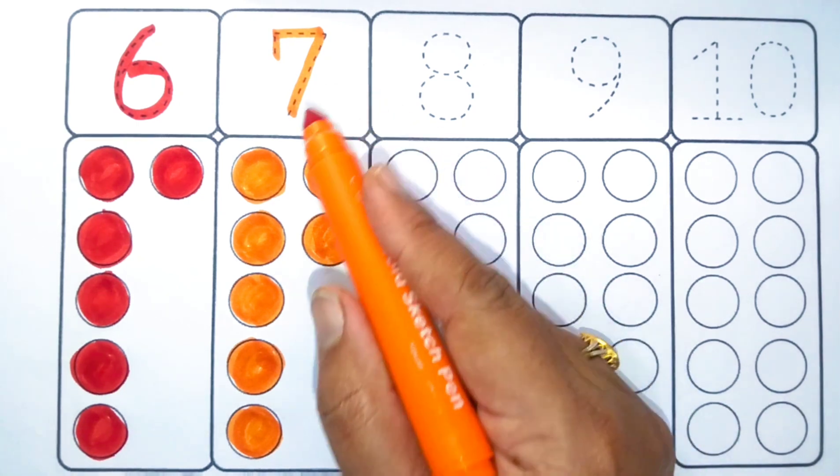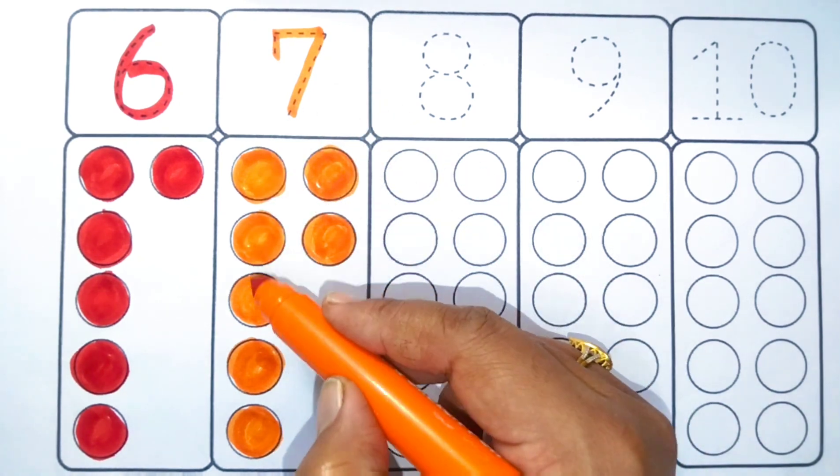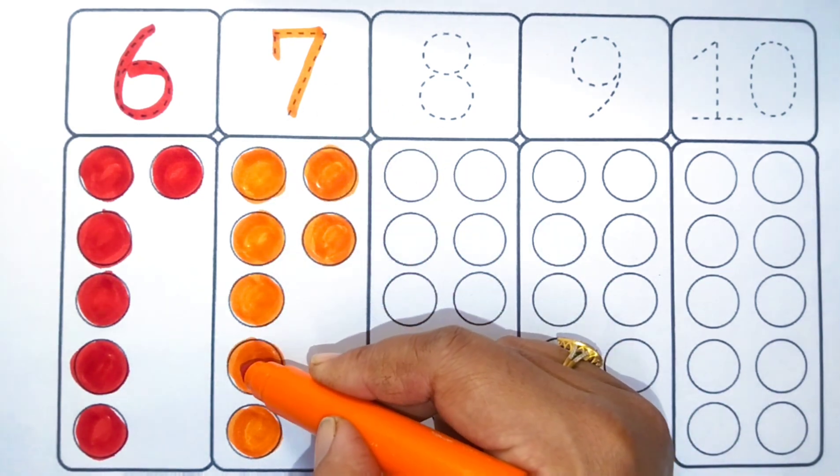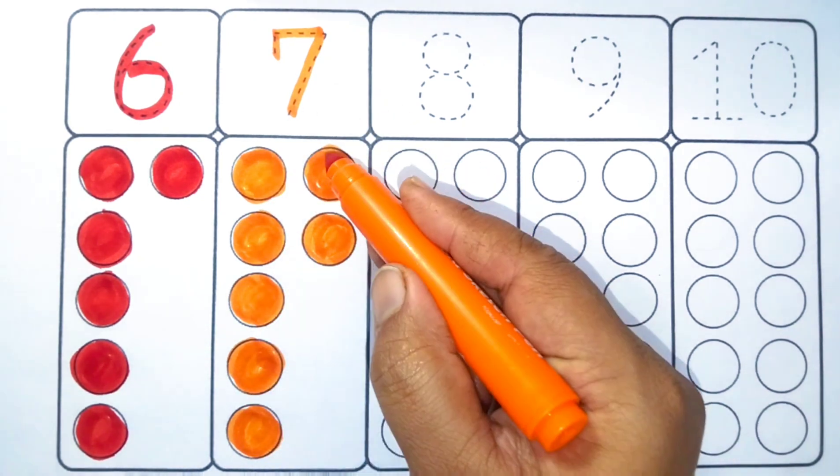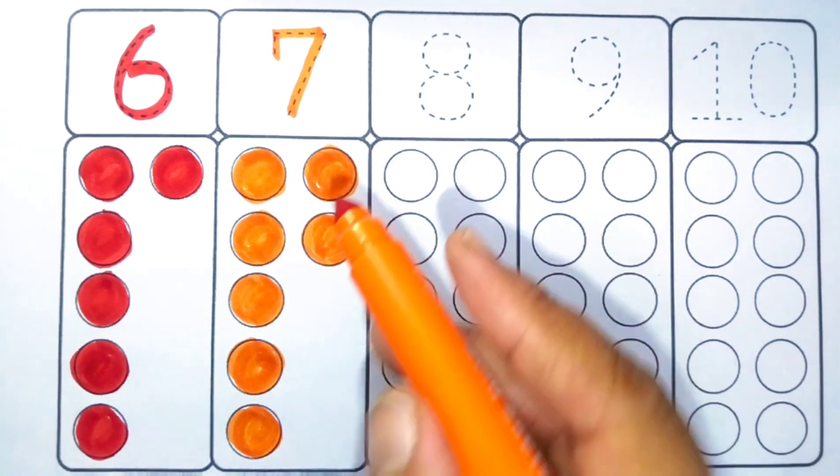Seven. One, two, three, four, five, six, seven.